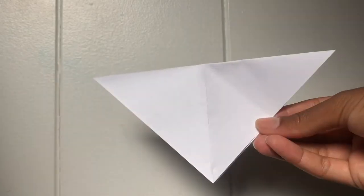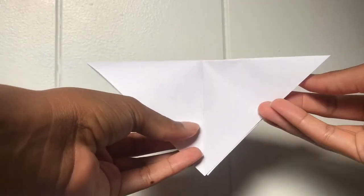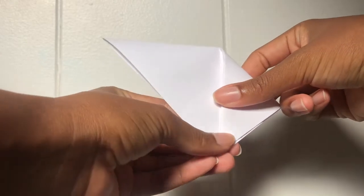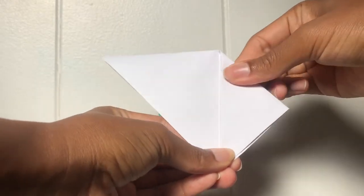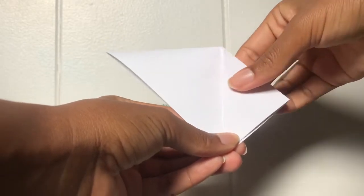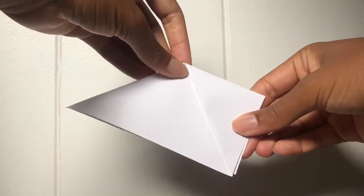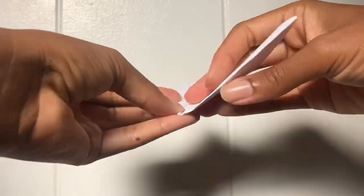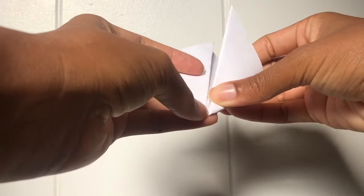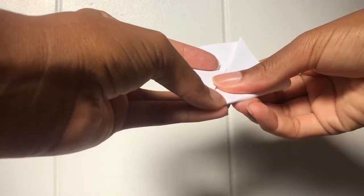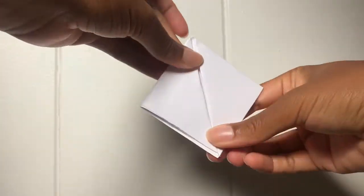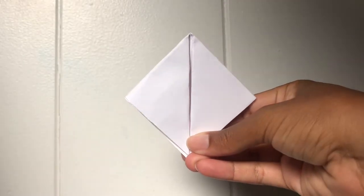So once you have your triangle shape, you want to take the right corner and bring it down to the bottom and then do the same step on the other side and you will end up with a little diamond shape.